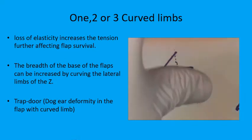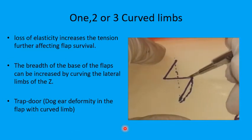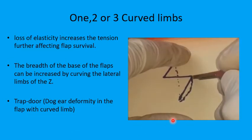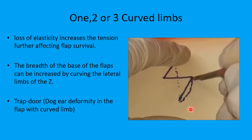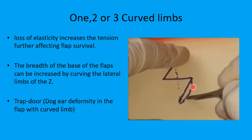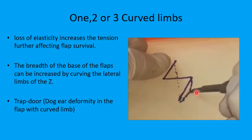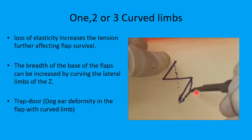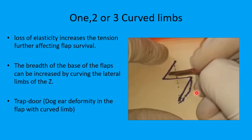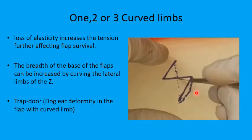In this example we are using the curvilinear flap design only on one of the limbs, and that increases the angle of the tip of the flap to help in increasing the tissue perfusion.